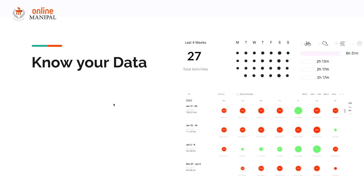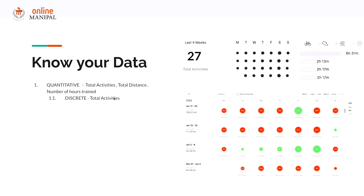Let's see the data types involved here. Starting with quantitative data — any variable that is a precise number. In this case it will be total activities, total distance, and the number of hours trained. Quantitative data can further be described as discrete or continuous. Any value which is finite or countable is termed as discrete — in this case, total number of activities — whereas variables measured within a range are termed as continuous — in this case, total distance.